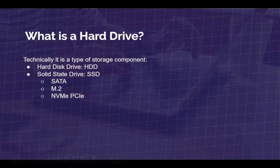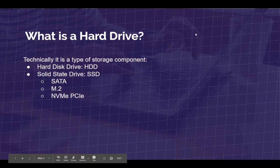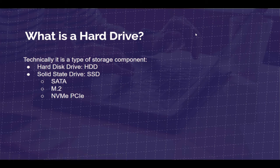Technically, a hard drive is a type of storage component. It is a hard disk drive, an HDD, which has a spinning disk and an arm that reads the information. Or it is a solid state drive, an SSD, which is a direct contact to the information — there's no moving disk, no arm. It just reads and writes straight off of the drive, similar to a thumb drive or a flash drive.